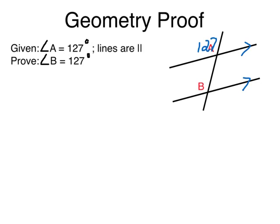Well, I'm going to write now all those mental steps into a written proof. So we start with what we know. We're on step 2 of writing a proof now. We know angle A is equal to 127 degrees and lines are parallel.